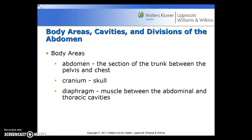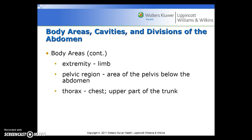When referring to body areas and cavities: the abdomen is the section of the trunk between the pelvis and the chest; the cranium is the skull; the diaphragm is the muscle between the abdominal and thoracic cavities; extremity refers to a limb; the pelvic region is the area of the pelvis below the abdomen; and the thorax is the chest or upper part of the trunk.